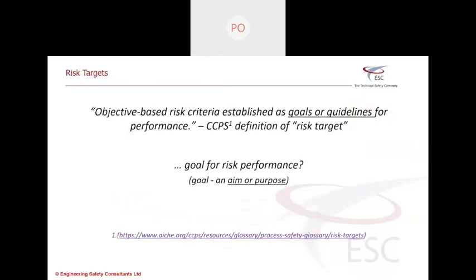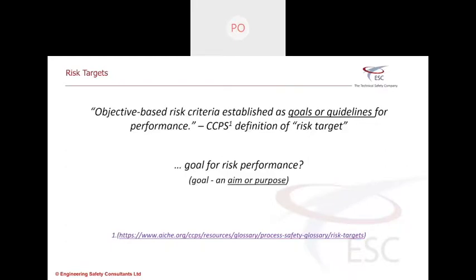So I'd like to kind of deconstruct expressions, especially nowadays, there's so many expressions and jargon in technical safety and in engineering that I think it's important to bring it back to basics. So I had a look at a number of definitions of risk target and I particularly liked the CCPS definition of risk target. They define it as an objective-based risk criteria established as goals or guidelines for performance. Now if we look at those words and we kind of link it to what they are actually trying to tell us, we could say that actually a risk target according to the CCPS is a goal for our risk performance associated with an asset with an operating plant with a specific task.